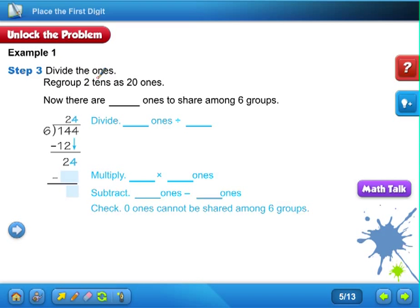Step 3: Divide the ones. Regroup the two tens as twenty ones. So now there are twenty-four ones to share among six groups.